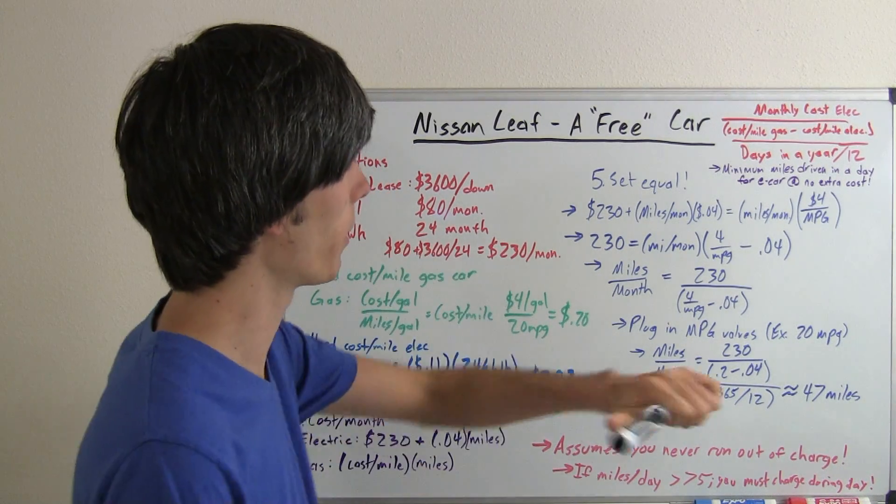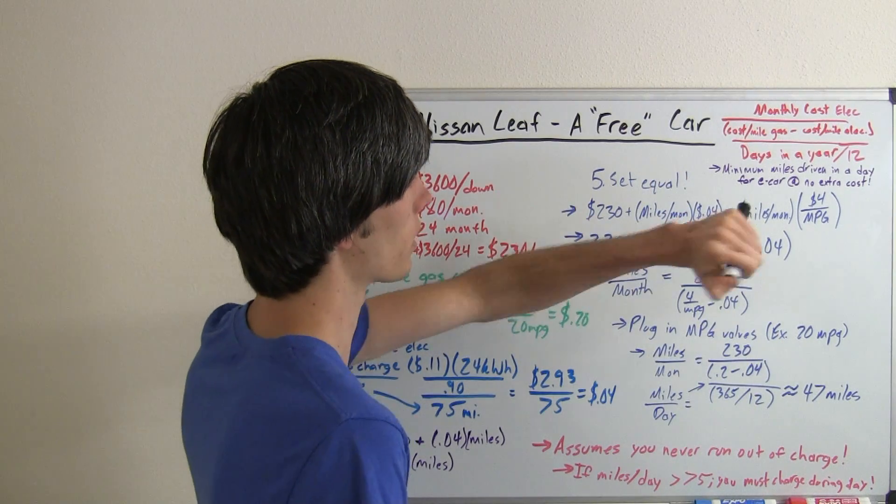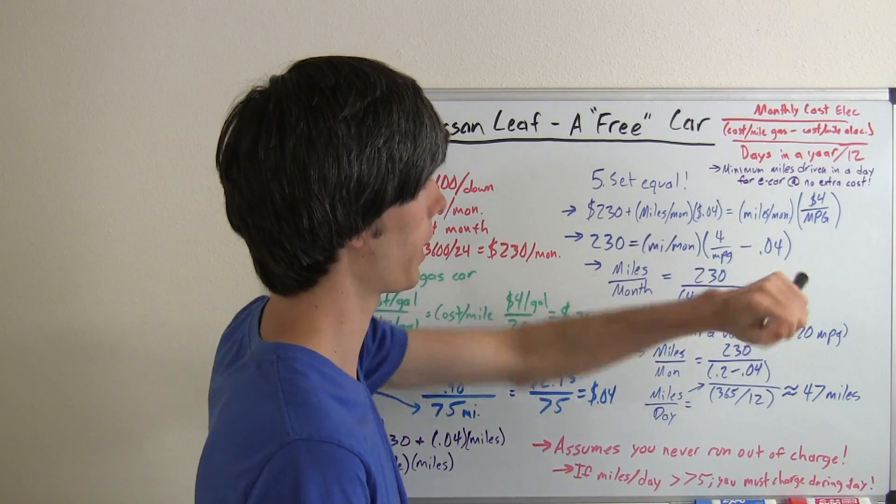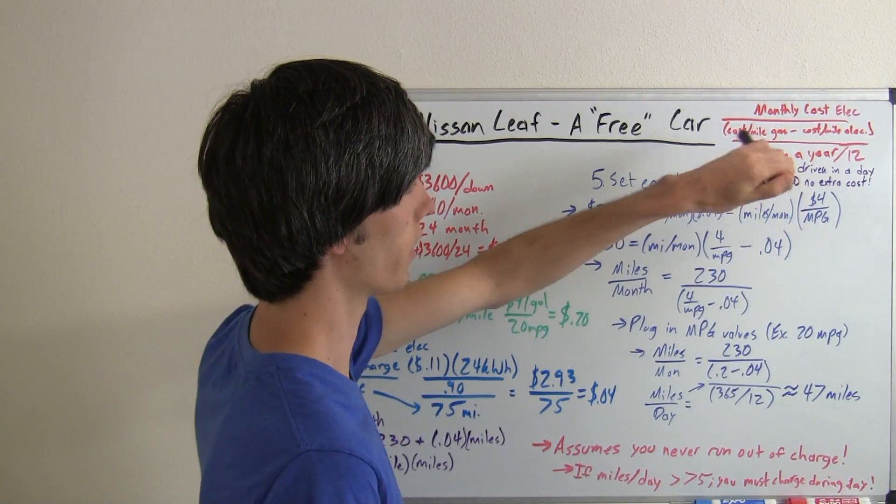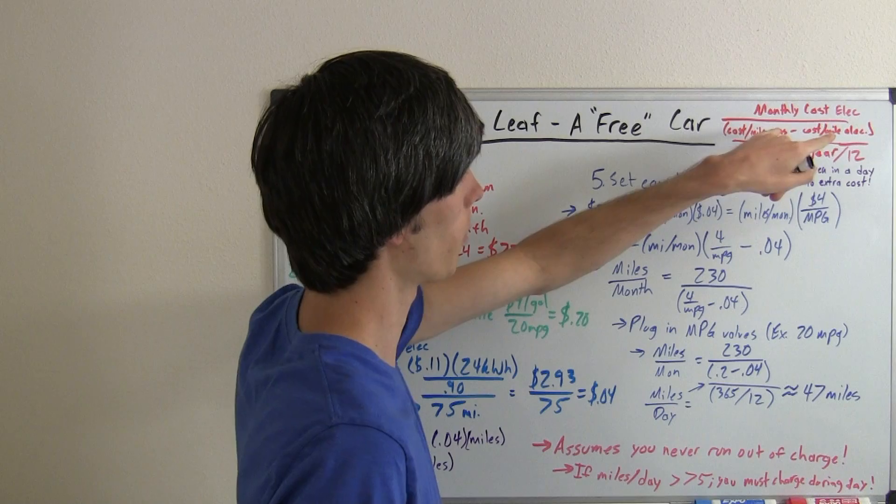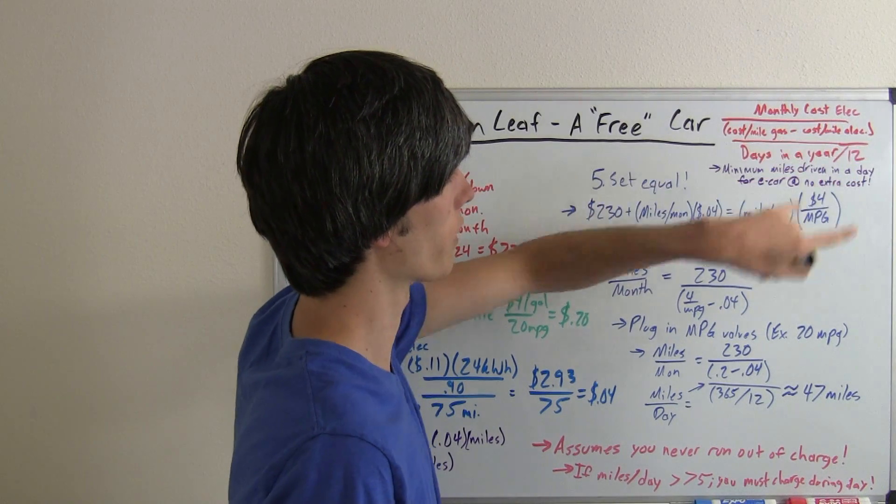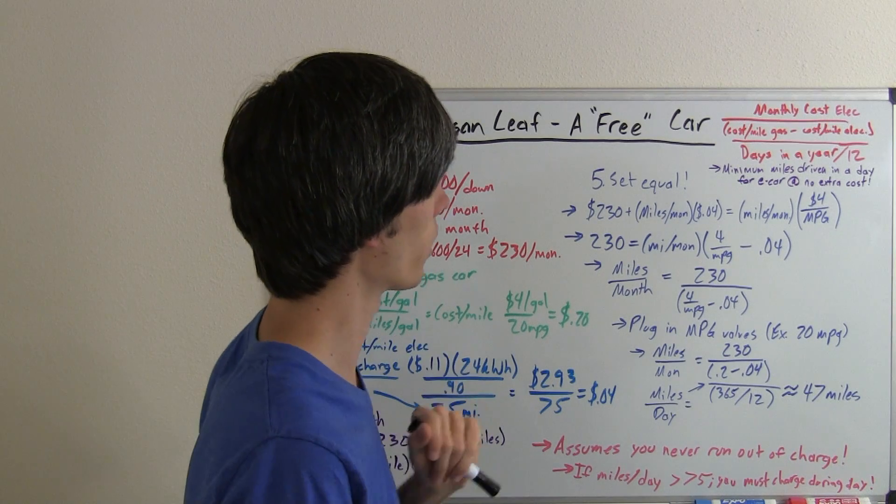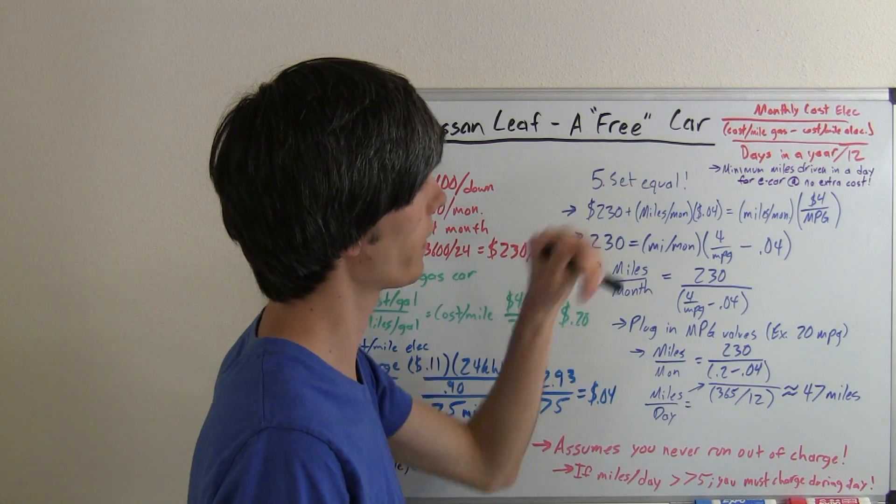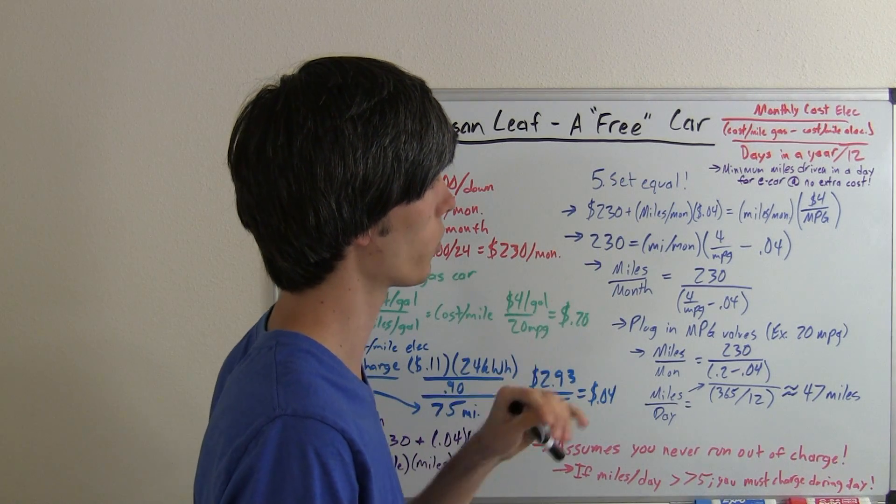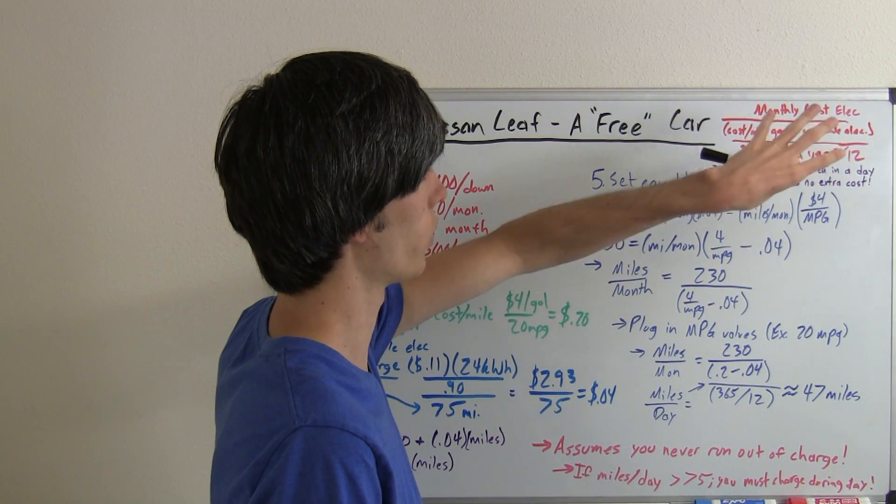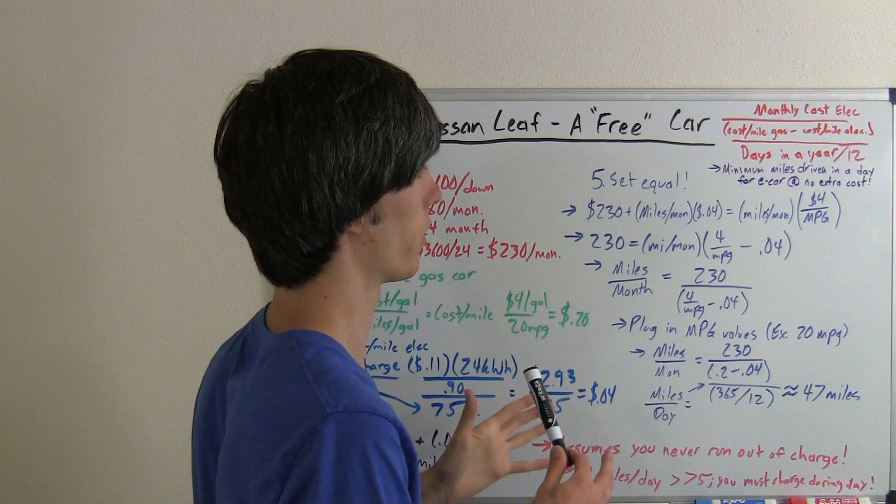Let me explain how this works. It all comes down to one very simple equation. The monthly cost of the electric vehicle or the lease payment divided by, in parentheses here we've got the cost per mile of gasoline of your current car minus the cost per mile of electricity for your electric vehicle. Divide that by the days in a year divided by 12. This will give you an output of miles per day.